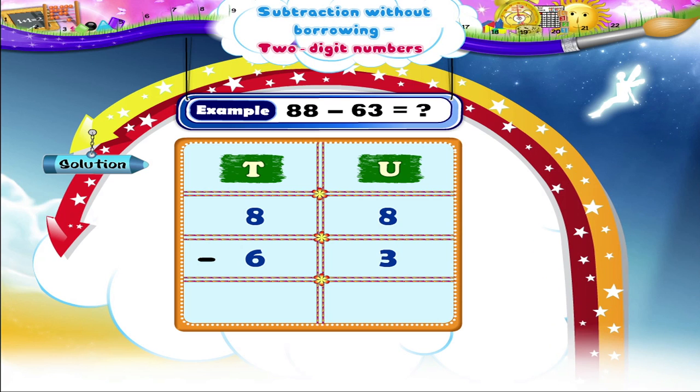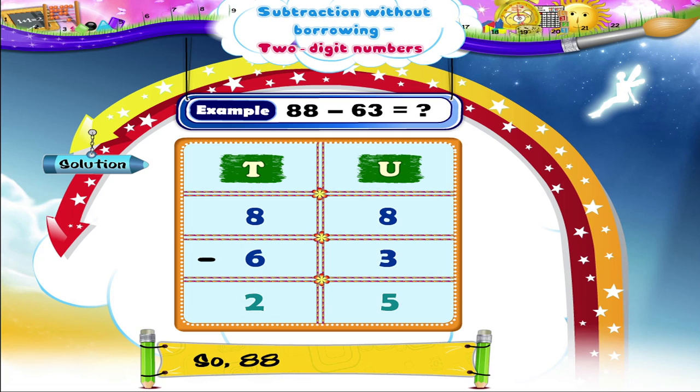8 tenths minus 6 tenths is equal to 2 tenths. So, 88 minus 63 is equal to 25.